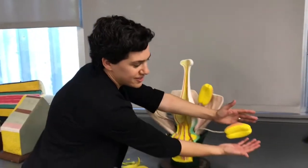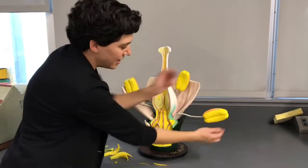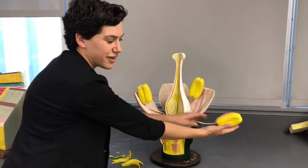So on this model, this is the anther, where all the pollen is. And this is the filament. And together we have a stamen.